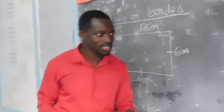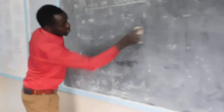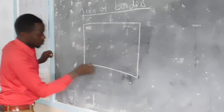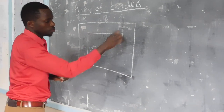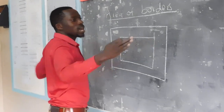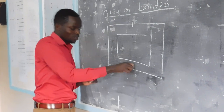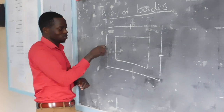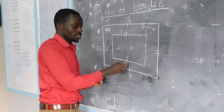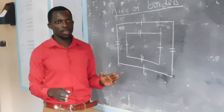What I want us to understand this morning is the area of the borders. Let me draw example 2. I have drawn two rectangles — the outer, which is the bigger rectangle, and the inner rectangle, which is smaller. You should also realize that opposite sides of a rectangle are equal, so this length is equal to the opposite side.